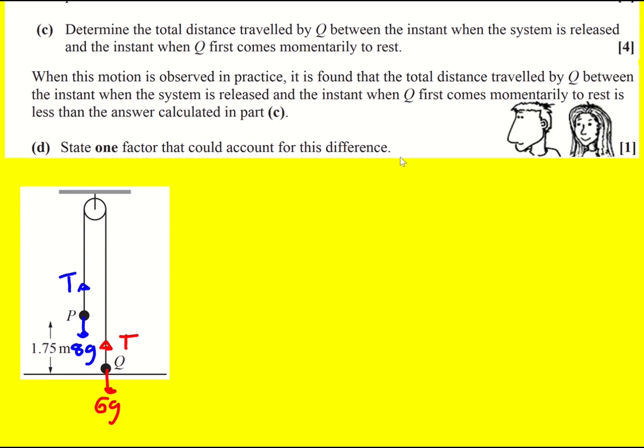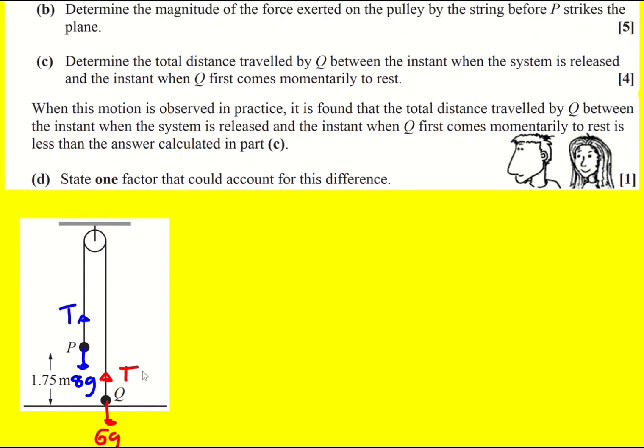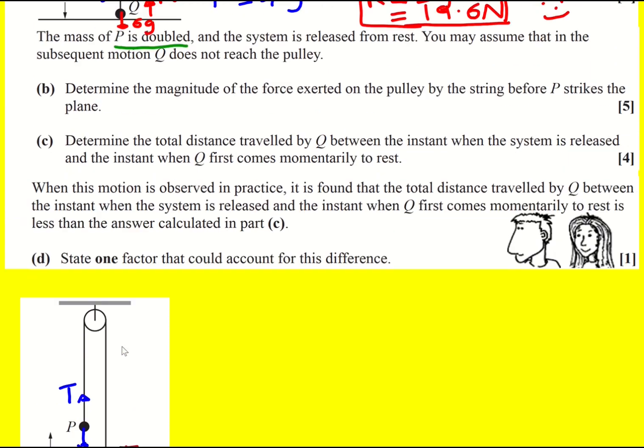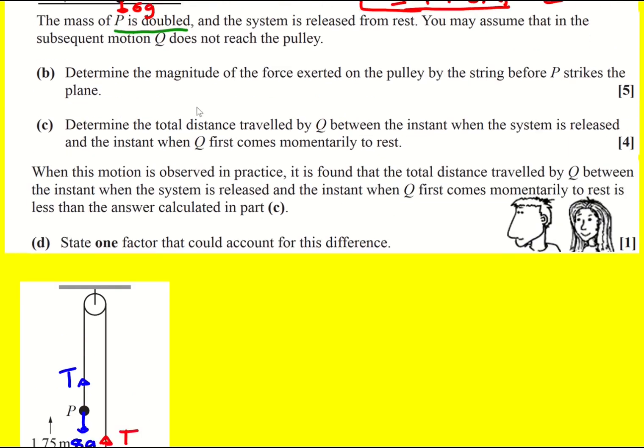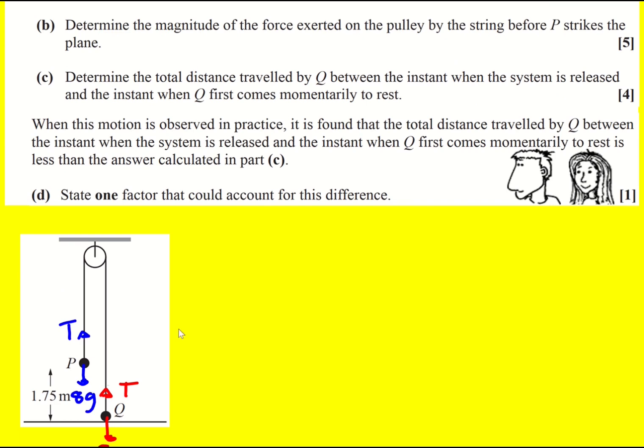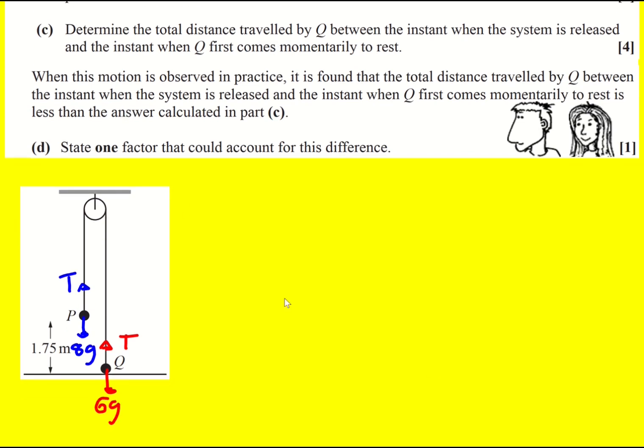Note that now when we're going to release the system, and although it's momentarily on the ground, it's about to move up. So there actually won't be a normal reaction force. And we've got this 1.75 meters in there as well. Determine the magnitude of the force exerted on the pulley by the string before P strikes the plane. Okay, we need to think about the forces on the pulley. So in blue, the forces on P, and in red, the forces on Q.